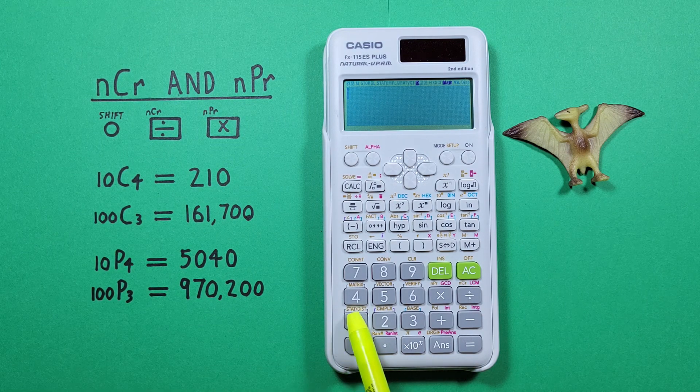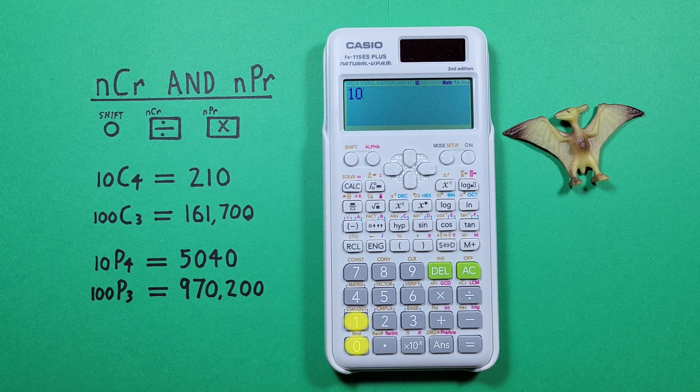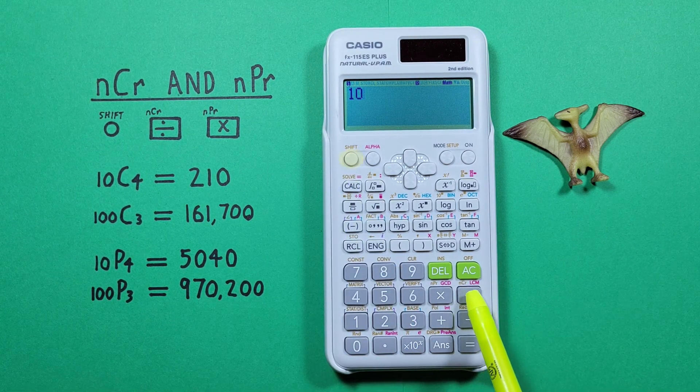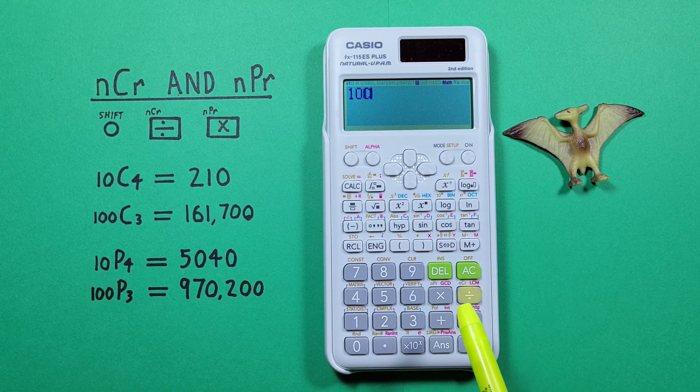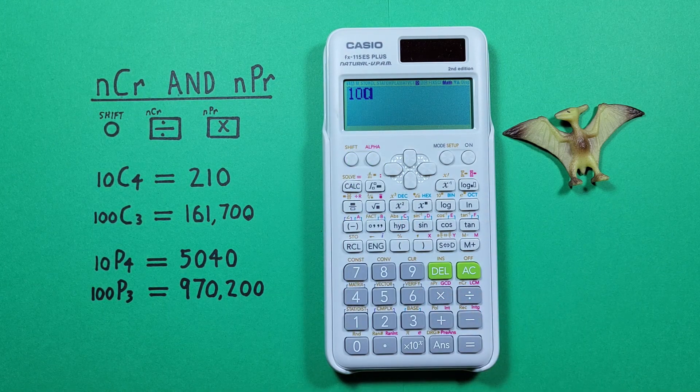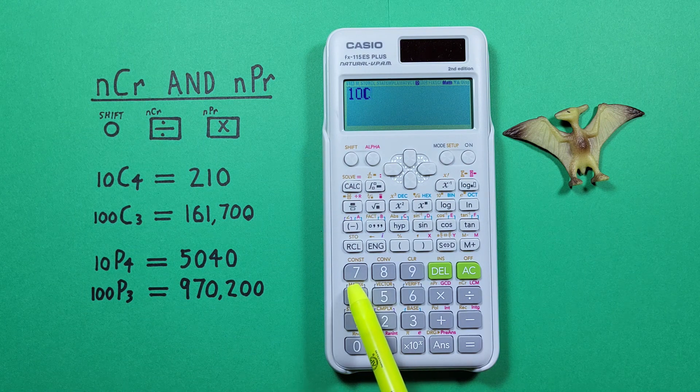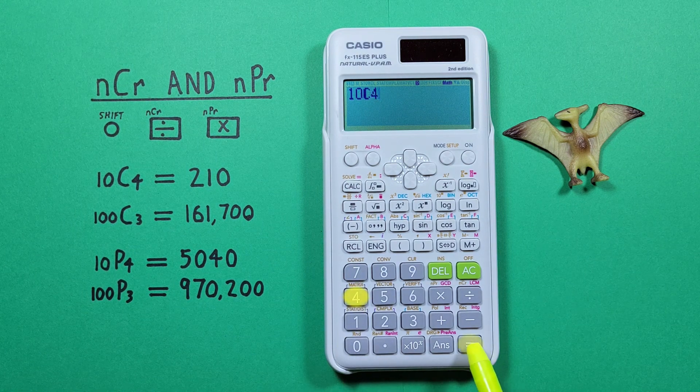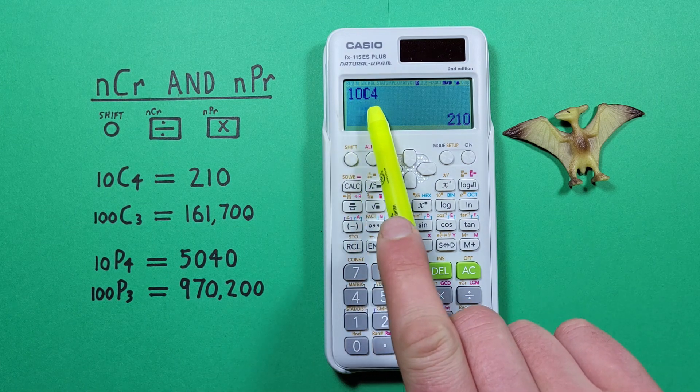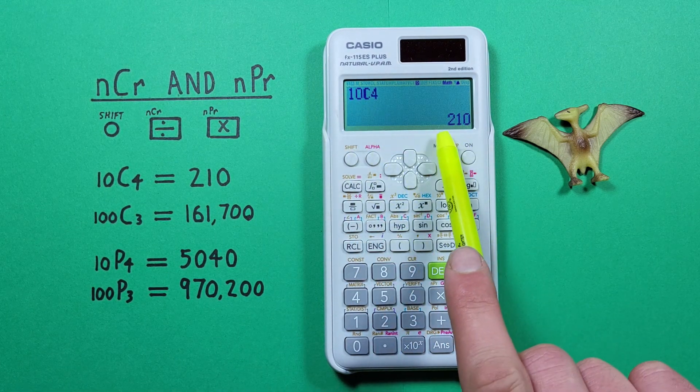We start with 10 on our screen and then press shift and then the division key with the shift function of combination and we see the C there which represents combinations and then the 4 and press equals and see we get 10 choose 4 combinations is equal to 210.